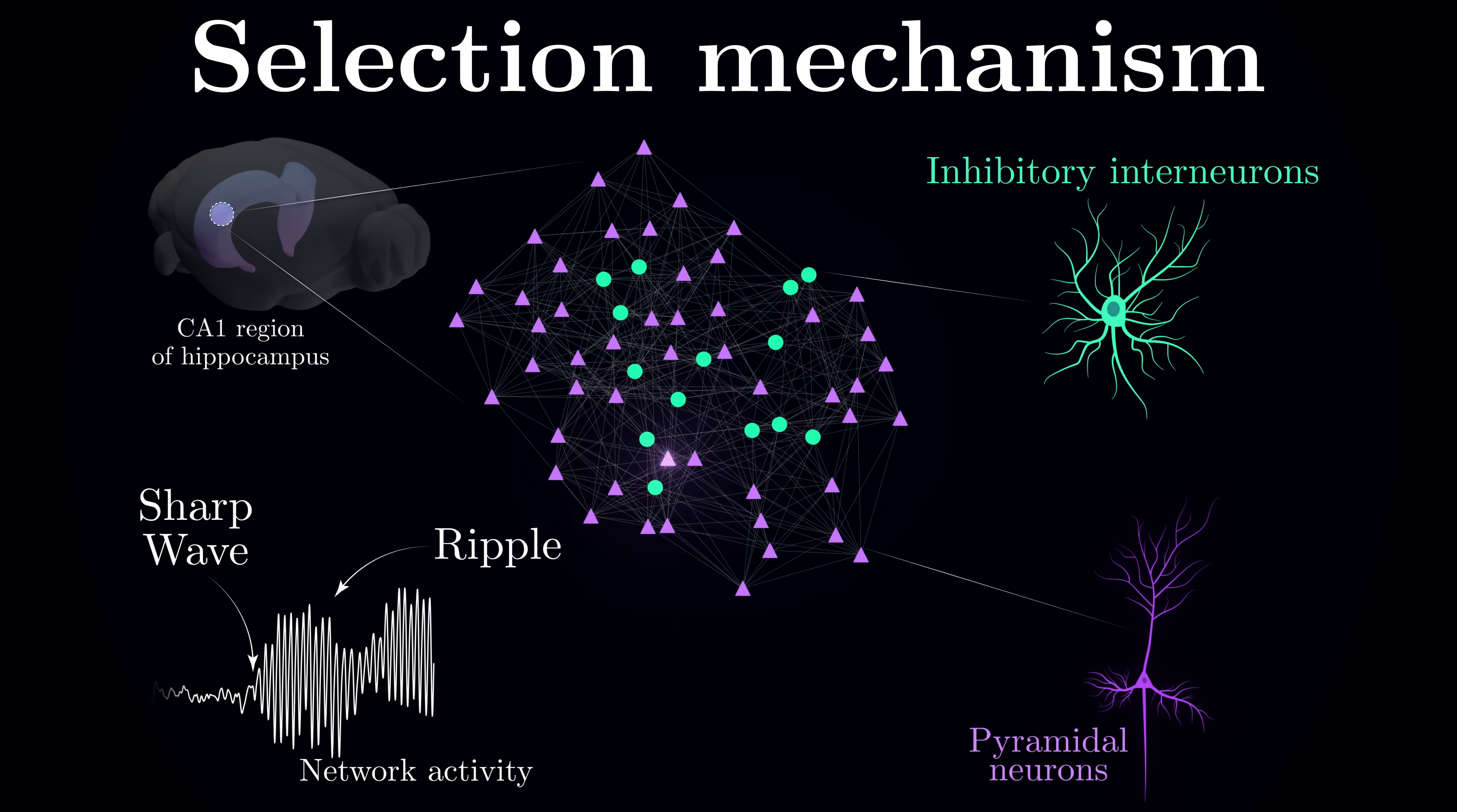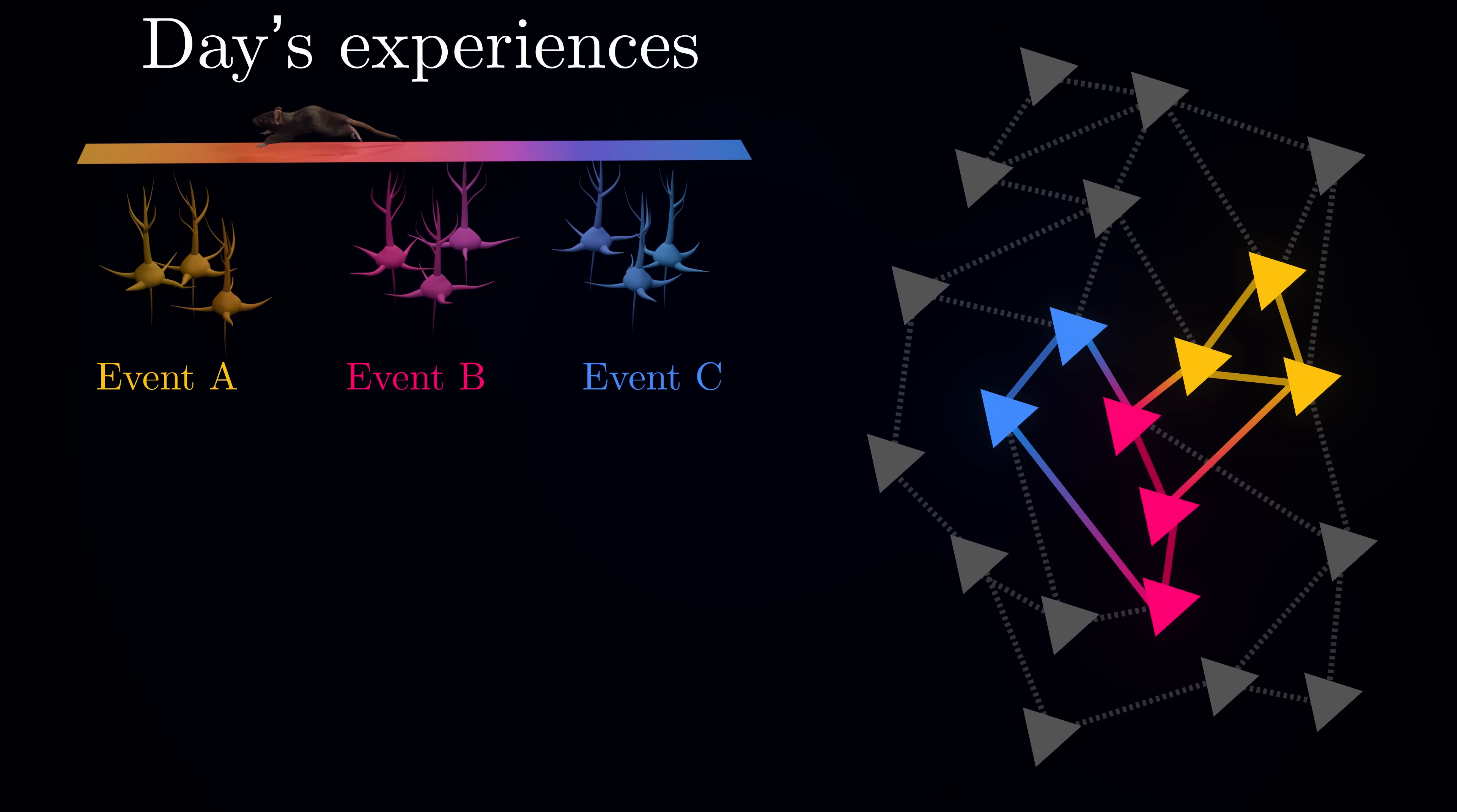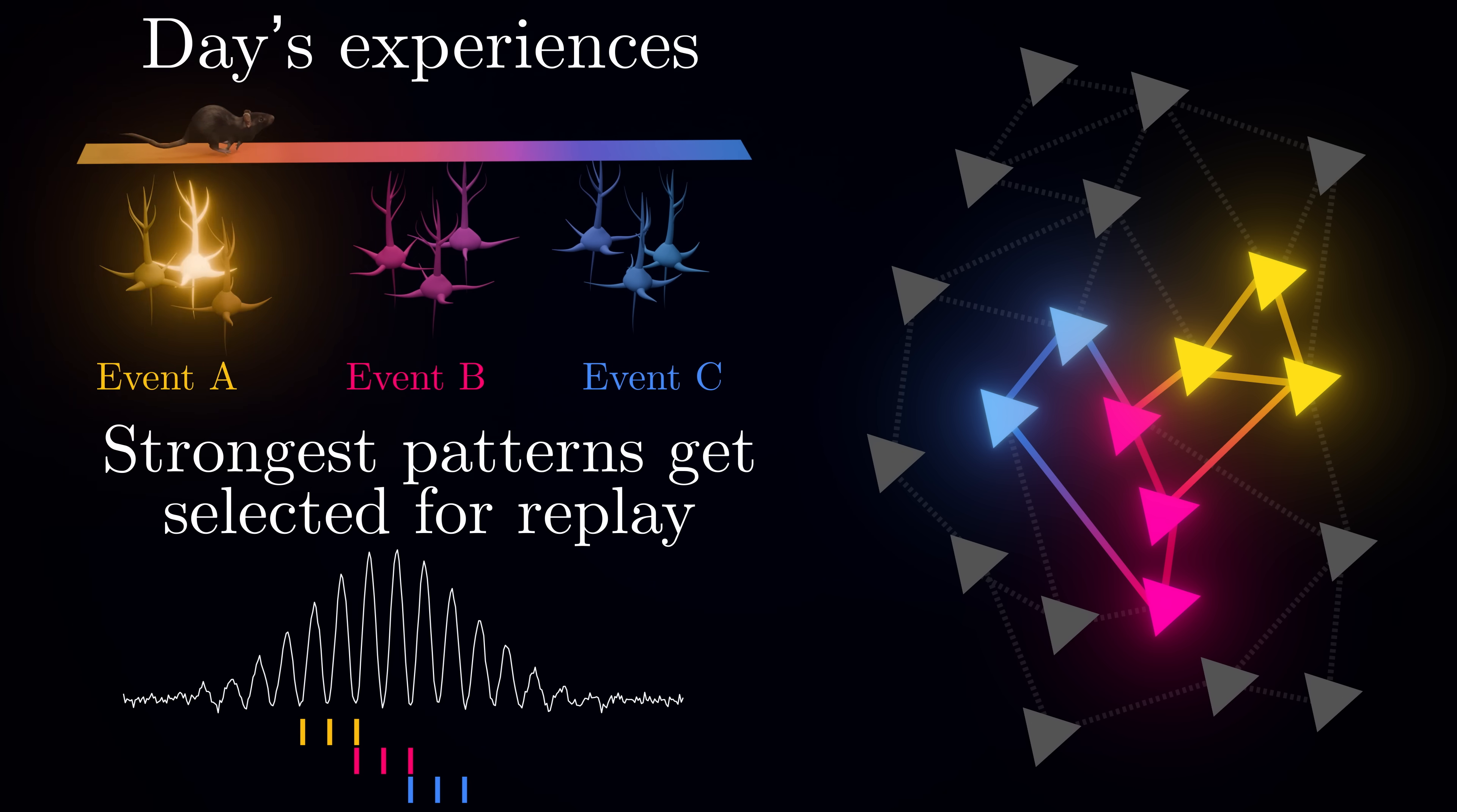This choreography of neural activity serves a crucial purpose. It creates a powerful selection mechanism for memories. When the wave of excitation sweeps through the network, it primes many neurons to fire. Yet, they can't all fire at once. The inhibitory interneurons act as gatekeepers, limiting overall activity and creating narrow windows of opportunity – brief moments when only selected groups of neurons can be active. Such interaction between excitation and inhibition sets up a form of competition in the neural network. Throughout the day, our experiences have left their mark by strengthening certain connections between neurons while leaving others unchanged or even weakening them. Some patterns of activity have become robust pathways while others remain weak trails. When the wave of excitation arrives, these different patterns, each encoding a different memory, compete for expression. In this neural contest, the strongest patterns typically win. And remarkably, these winning patterns that get to be replayed tend to represent the day's most significant events.